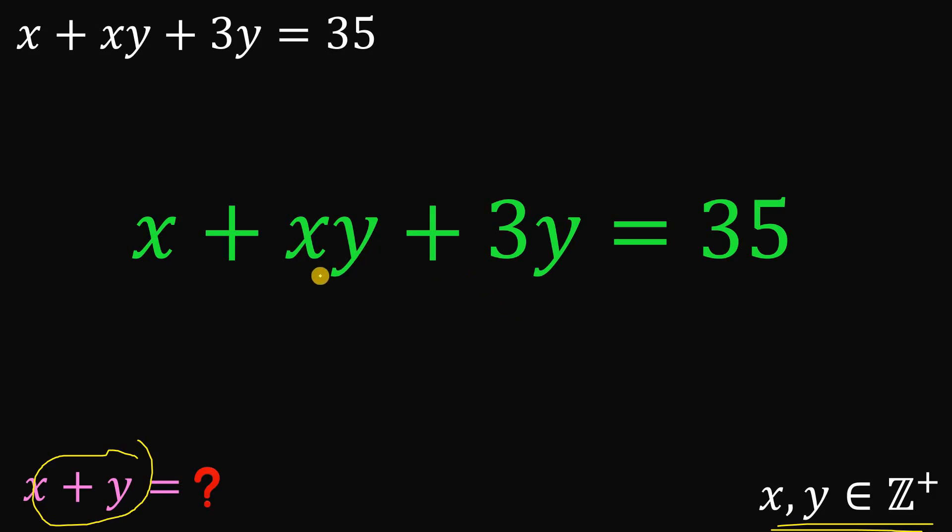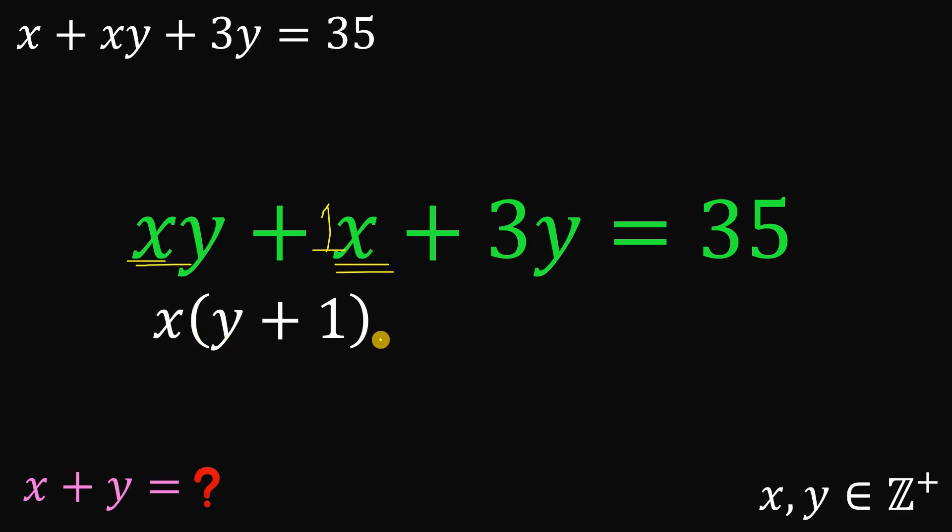Alright, so to answer this question, what we're going to do is rearrange some terms a little bit. Take note, we can factor out a common factor of x. Because we have x right over here, we can factor out x. If we do that, we get x multiplied by y plus 1. So we can replace this with the factored form.